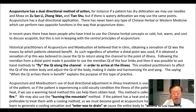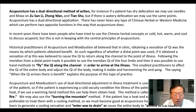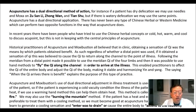Historical practitioners of acupuncture and moxibustion all believed that in clinic, obtaining a sensation of qi was the means by which patients obtained benefit. Regardless of whether a distal point was used or obtained a sensation of qi, this was believed to cause qi to return along the channel to the point of the illness. Following the meridian from a distal point made it possible to use the meridian qi of the four limbs, then use hand methods to fly the qi along the channel in order to arrive at the illness. This enabled practitioners to affect and adjust the qi of the entire body, making it stable and harmonizing yin and yang. The saying is: when qi arrives, there is benefit.